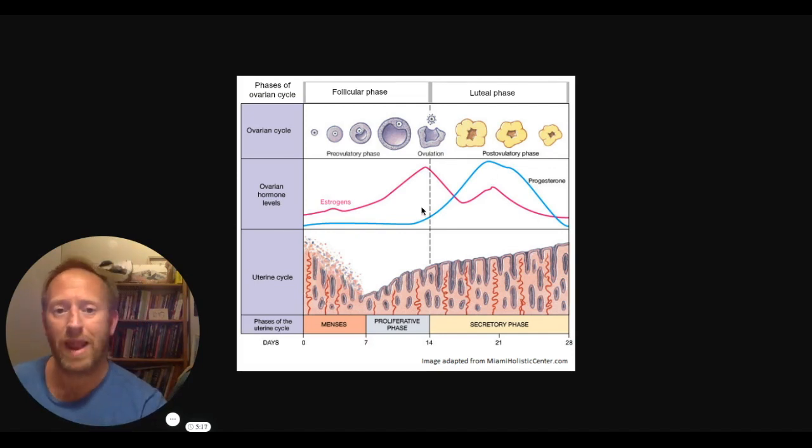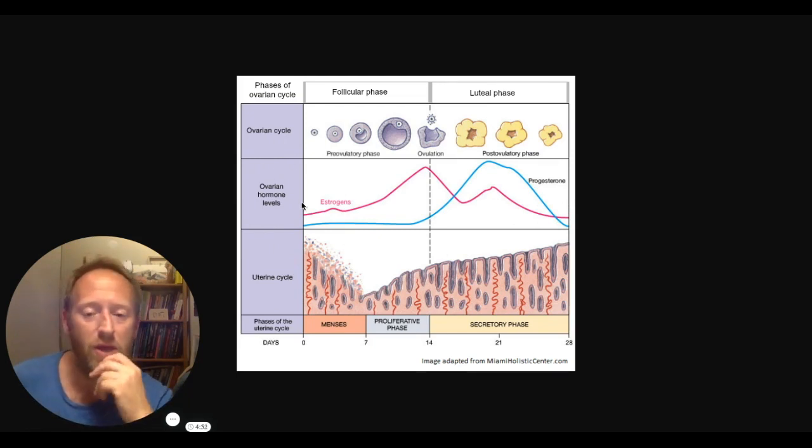So what we need to do is stop blaming this area and blaming progesterone as being the problem. When in fact, estrogen and estrogen dominance, a lack of carbohydrates in a low blood sugar state are primarily the reason why the negative symptoms of PMS tend to occur. I tend to find that with most of my clients occurring here, just here as progesterone's lowering down and estrogen is on the rise again. But when this usually kicks in, it can have a number of negative effects.